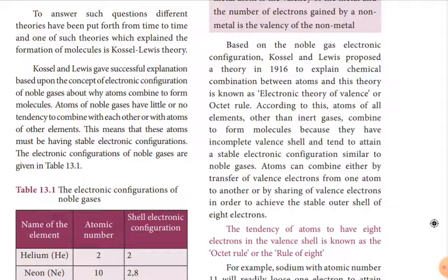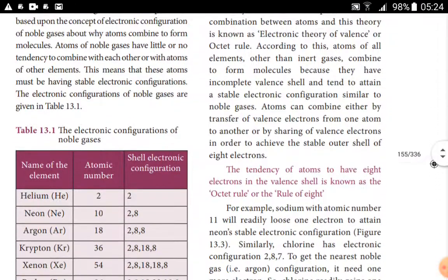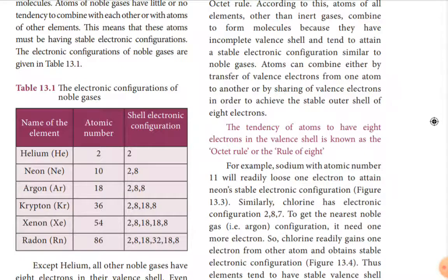Atoms of noble gases have little or no tendency to combine with each other or with atoms of other elements. This means these atoms must have a stable electronic configuration. Noble gases are not combining because they have stable electronic configuration. Let's see the configuration of noble gases. Helium has atomic number 2, so only two electrons. Atomic number means the number of protons or number of electrons.